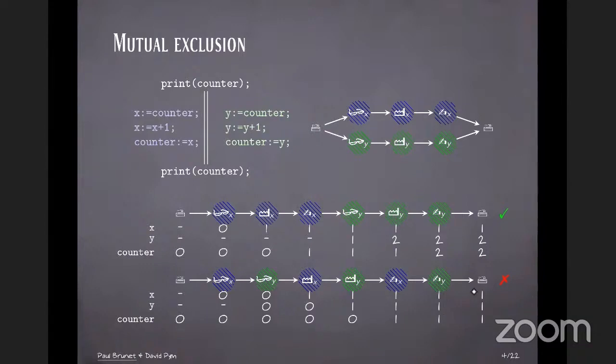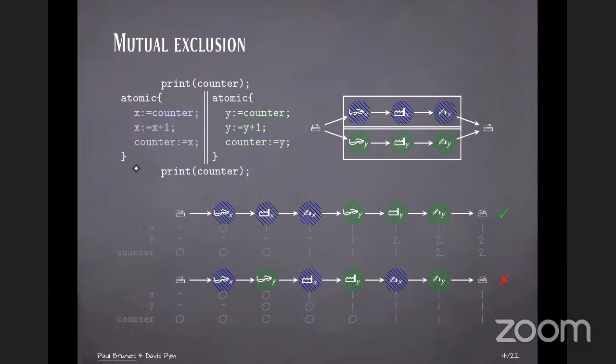To counter that in a normal programming language, we would add something like this. An atomic construct that prevents the two threads from interfering with each other. And so in this work, we represent this at the level of Pomset by drawing boxes around them. And that way, the first execution can be accepted because you can find a way to write the boxes that is consistent, but the second one is rejected.